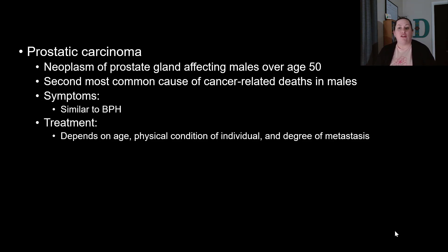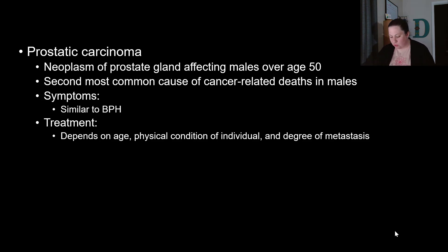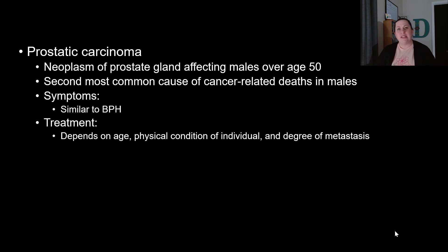Treatment for prostatic carcinoma depends on the patient's age, physical condition, and whether the cancer has metastasized. In older patients, surgery and chemotherapy may be too risky. Hormone therapy using estrogen can counteract testosterone to slow cancer development. Prognosis is fairly good since the cancer spreads slowly, with 50–75% of affected individuals living five or more years after diagnosis.